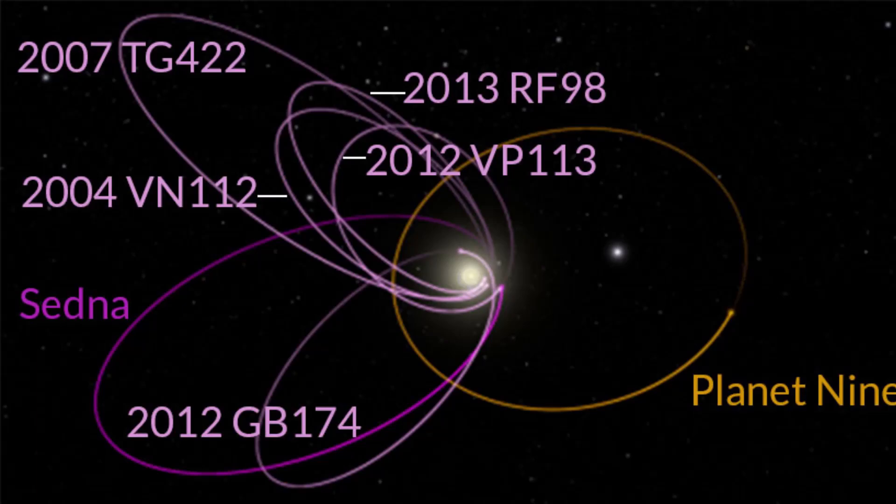Their journey began with a peculiar observation. A handful of small, icy objects in the distant Kuiper Belt were behaving strangely. These objects, instead of following random orbits, seemed to be clustered together, their paths inexplicably aligned.